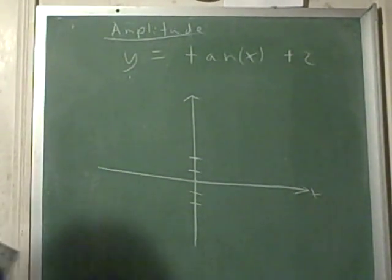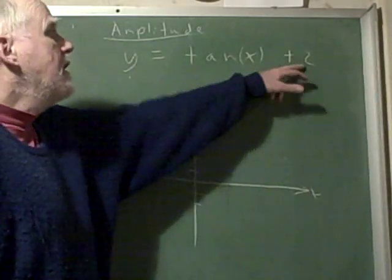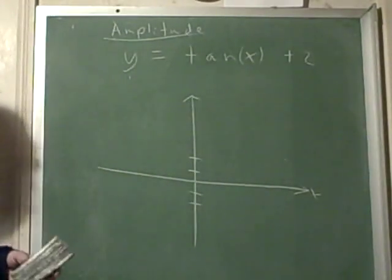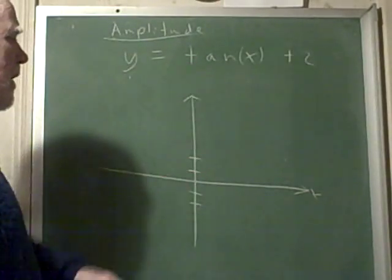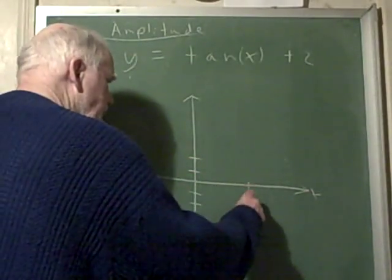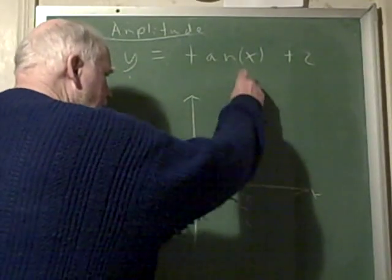Another alteration you can have is, for example, y equals tan(x) plus 2. What the plus 2 does is it adds two points to every point on the tangent function. So if this is the normal tangent function...